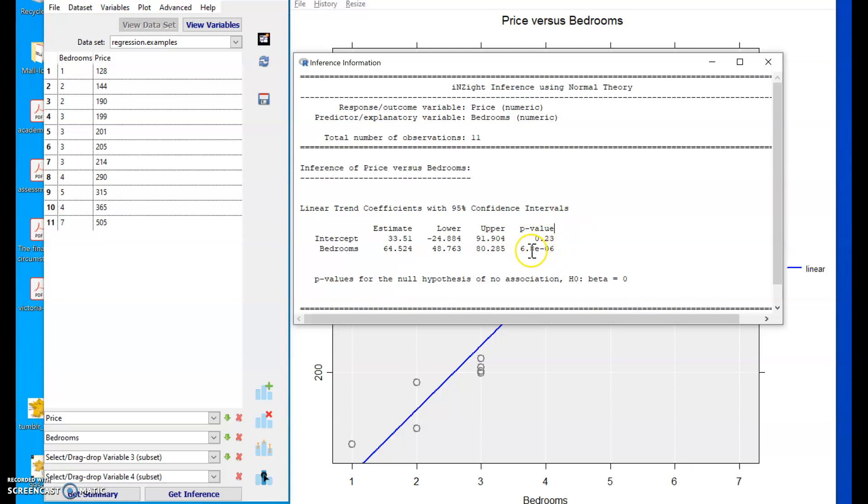The slope, this e to the minus zero six, that's telling us that number is 6.8 times 10 to the minus 6. So if we send the decimal point six places to the left, we end up with 0.000006. So a tiny number.